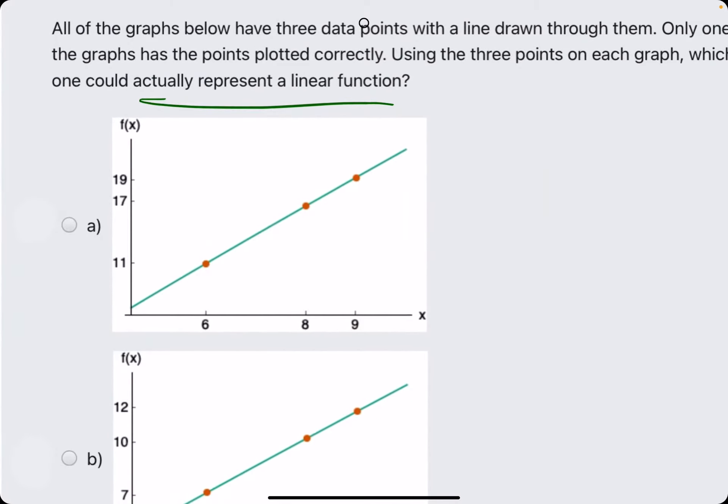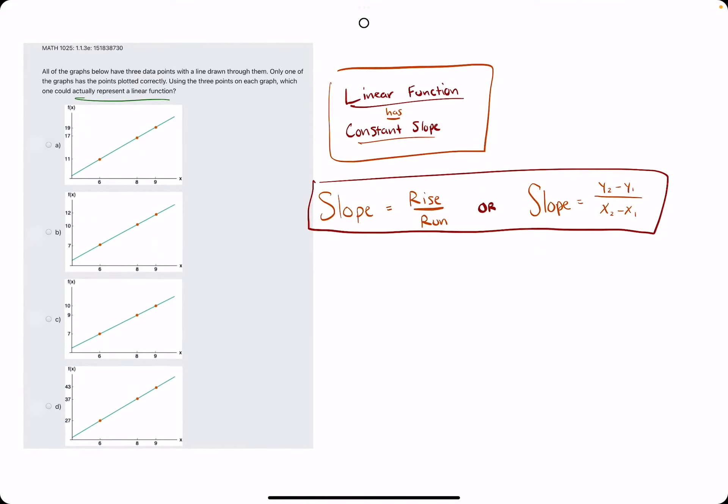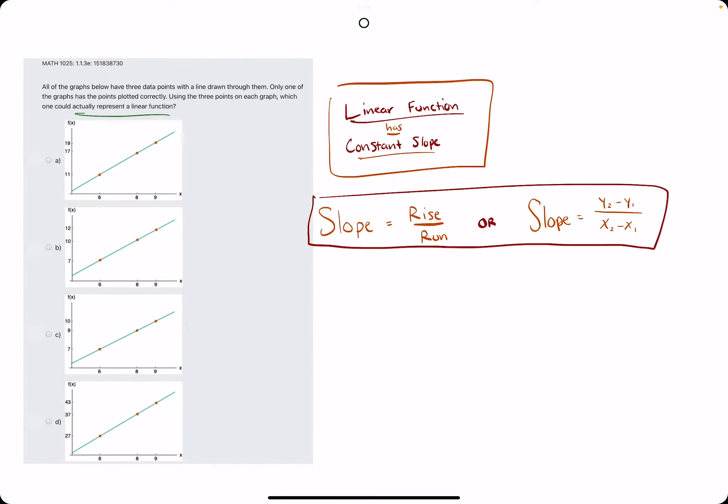So in other words, to check if A is a linear function, we want to make sure that the slope between these two points is equal to the slope between these two points. If the slope is equal between those two segments, then that means, or that'll be enough information to say it has a constant slope.